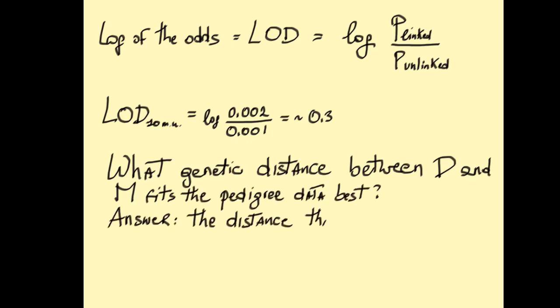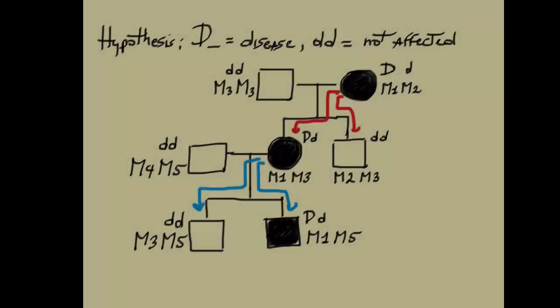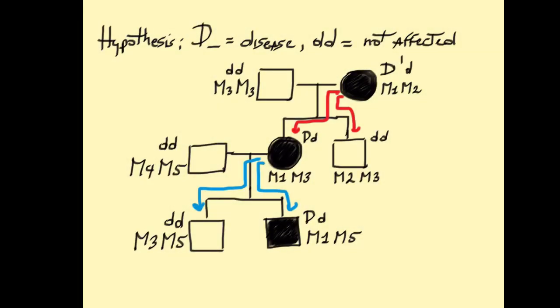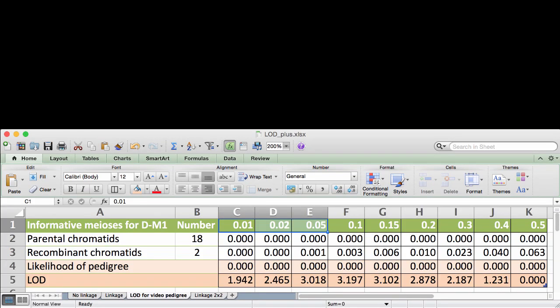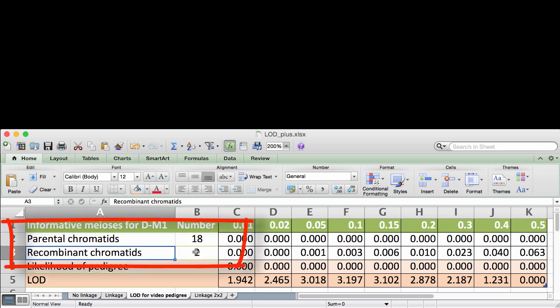What genetic distance between D and M fits the pedigree data best? The distance that gives the highest LOD. In this case, information provided by this pedigree does not yield a particularly strong signal. Disease gene hunters spend a lot of their time looking for large and thus informative pedigrees. To demonstrate this point, I have made an Excel spreadsheet that yields LOD for different situations.